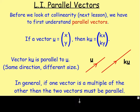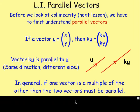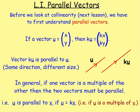Really, in general, if one vector is a multiple of the other, then the two vectors will be parallel. What that means then is u will be parallel to v if u equals kv. So in other words, if u is a multiple of v, then the two vectors will be parallel.